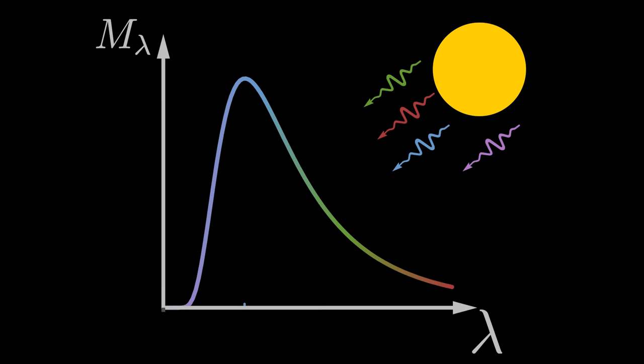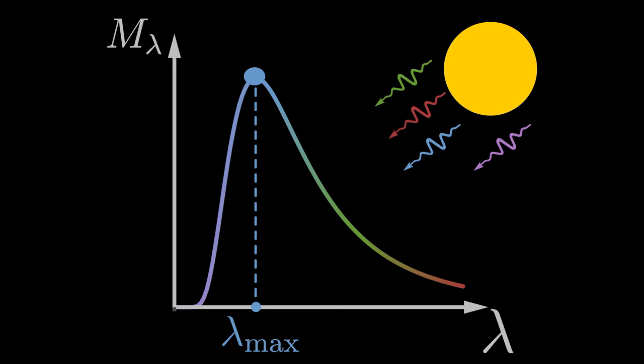From this distribution, we have to read off the wavelength lambda max, which has the highest intensity. So we have to read off the maximum of the function.